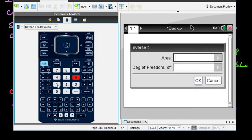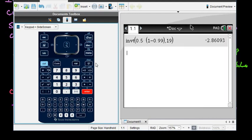The area that we are looking for anytime we are looking for a confidence interval is half of, or 0.5, times 1 minus the level of confidence. So in this case, our level of confidence is 0.99. And our degrees of freedom was 19 because our sample was size 20, so we just did 20 minus 1.